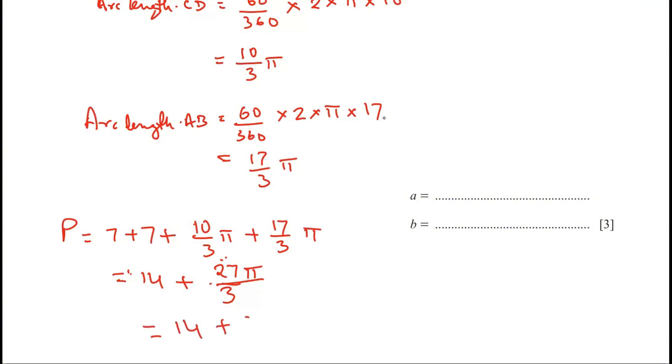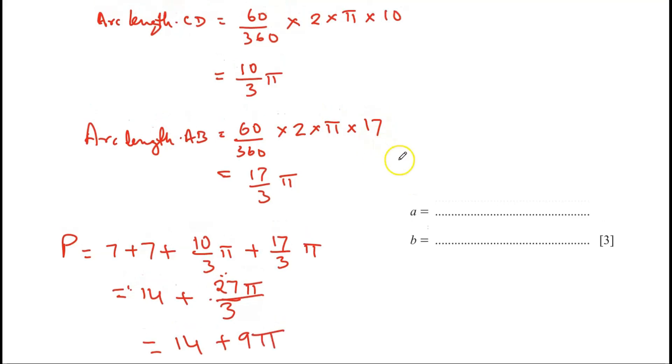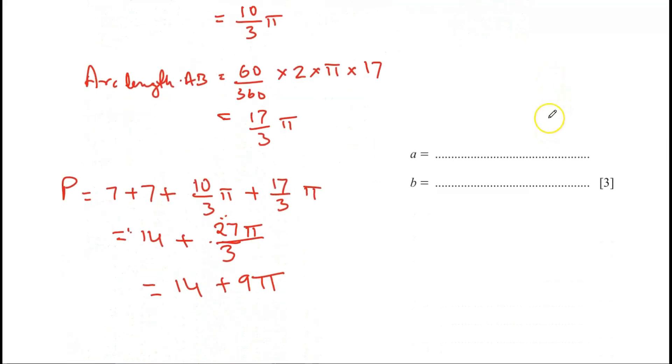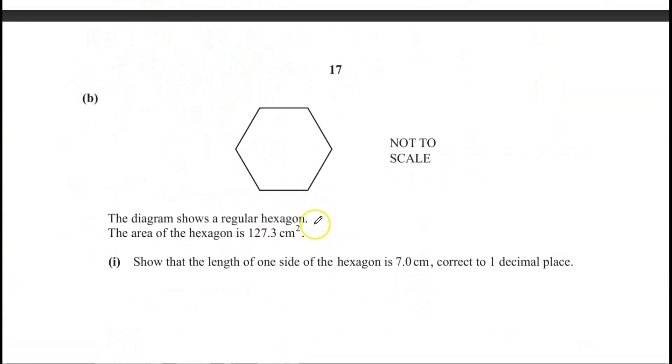So let's go back to the question. Here we have A pi plus B. So in this case A is 9 and B is 14. 9 and 14. All right guys. Let's go to part B.